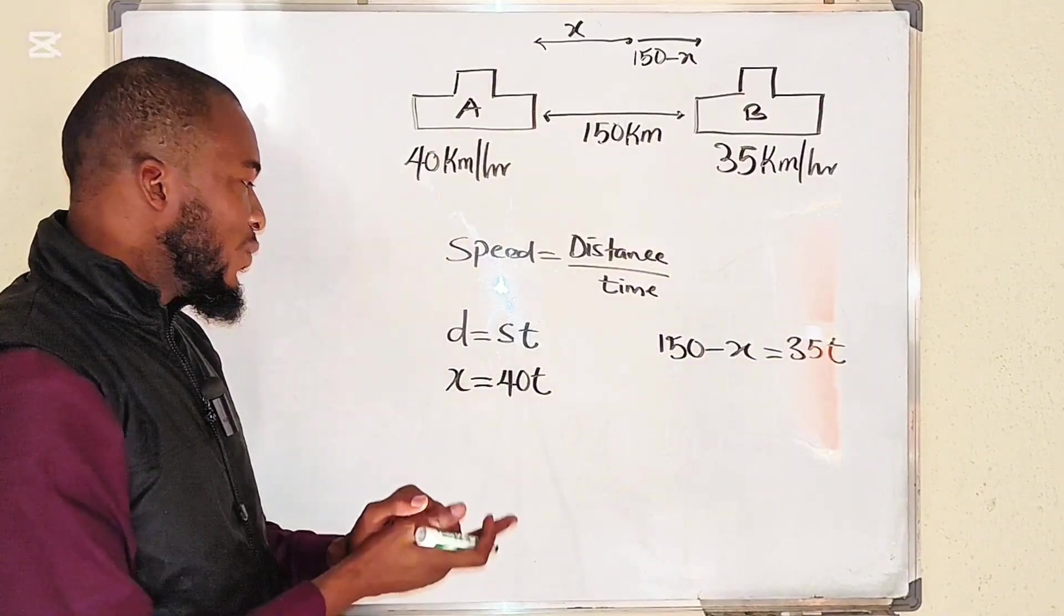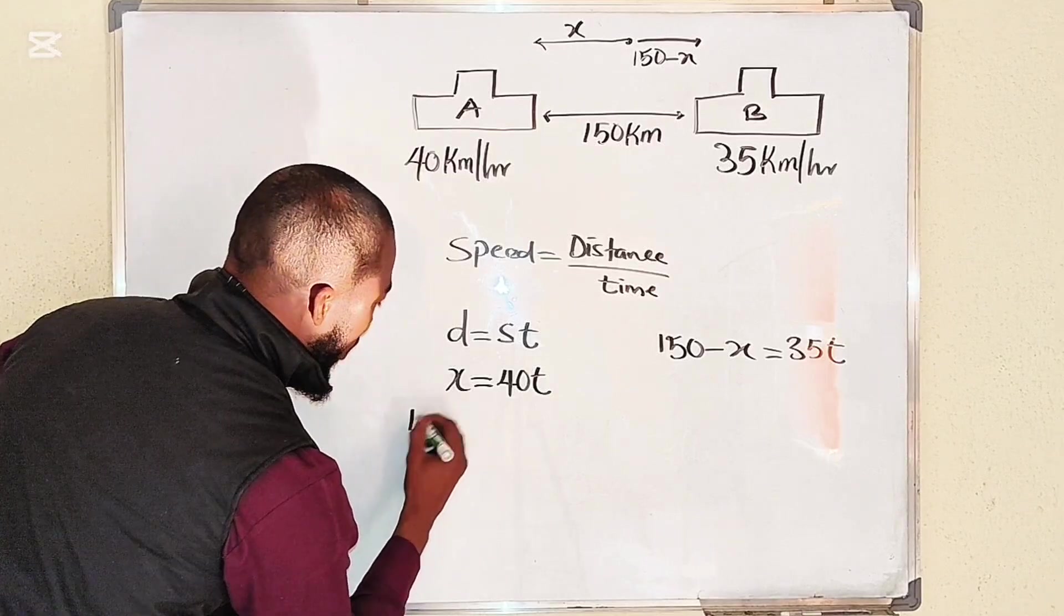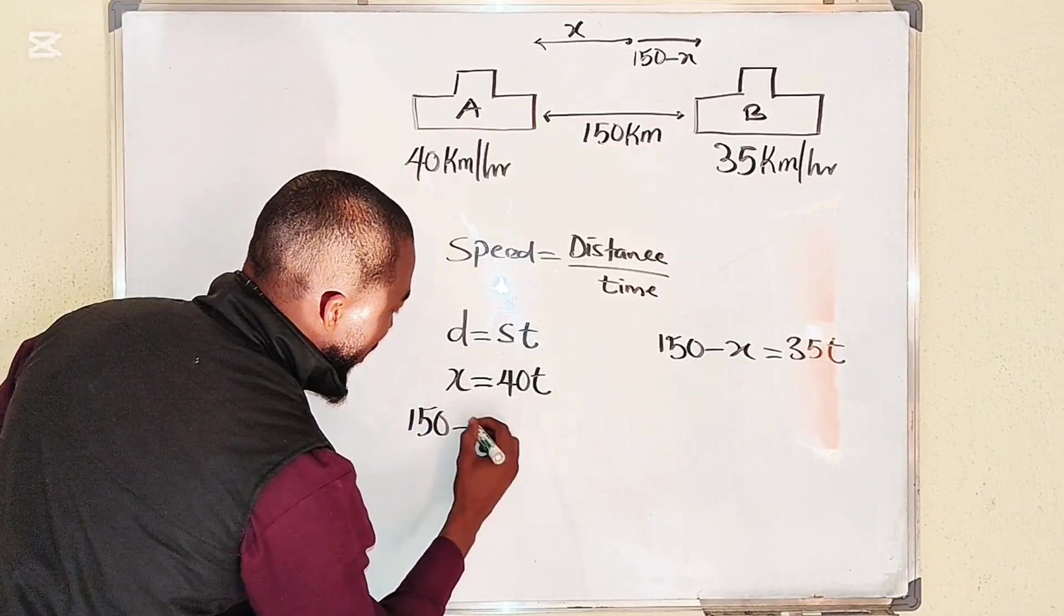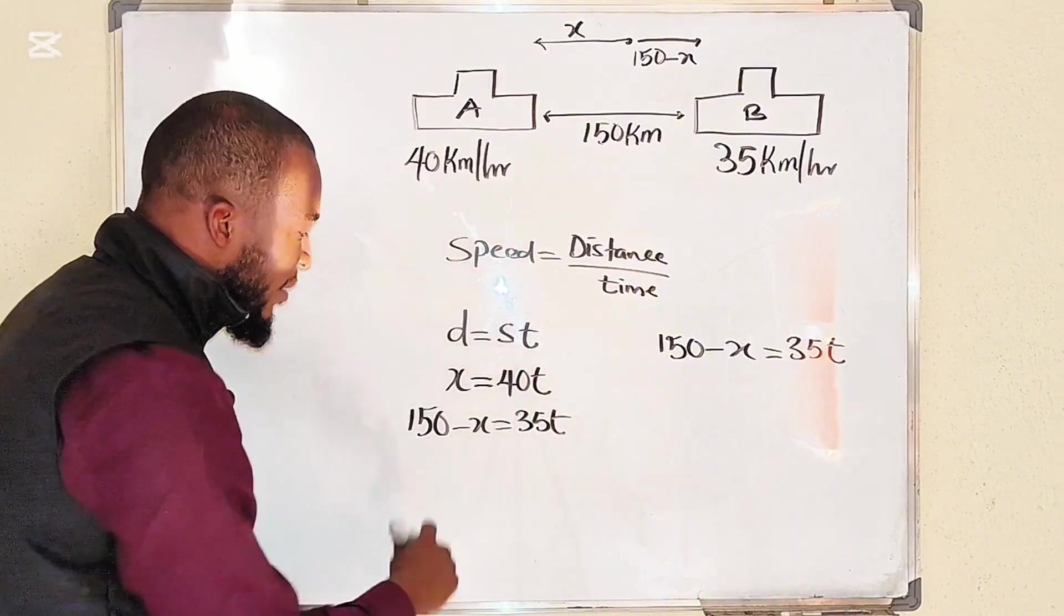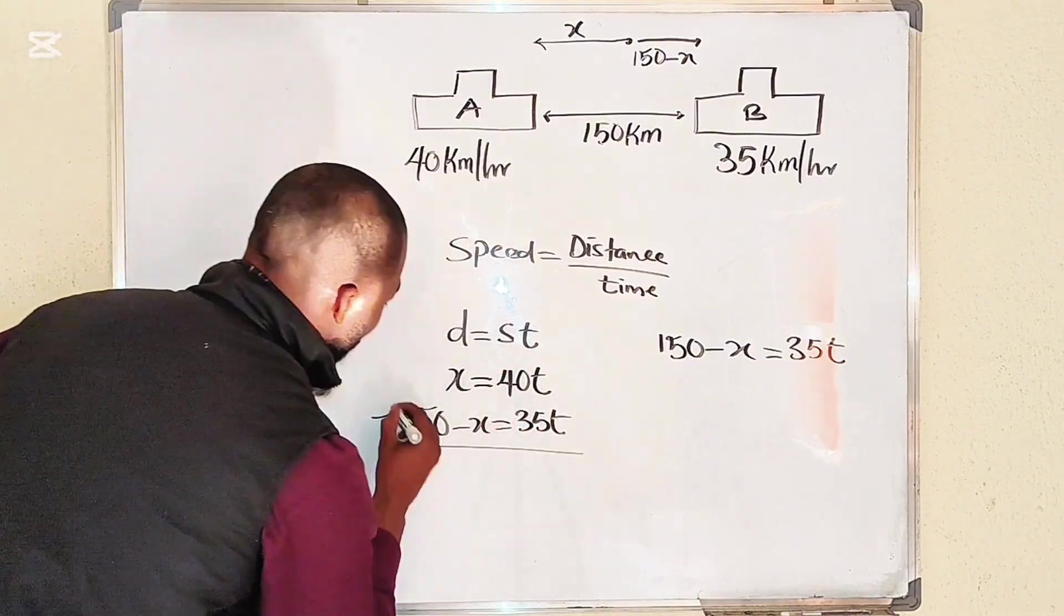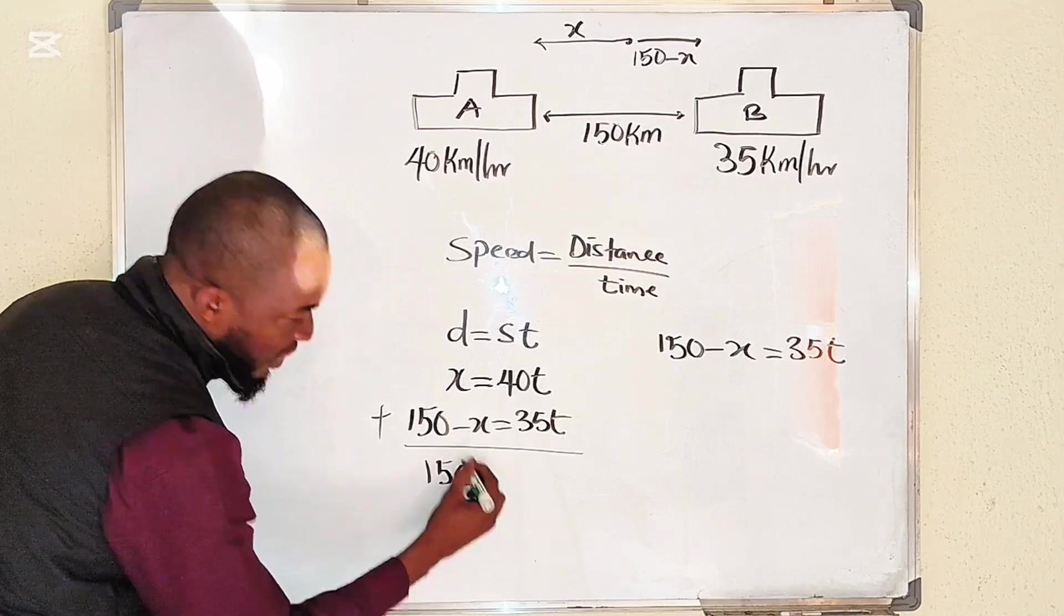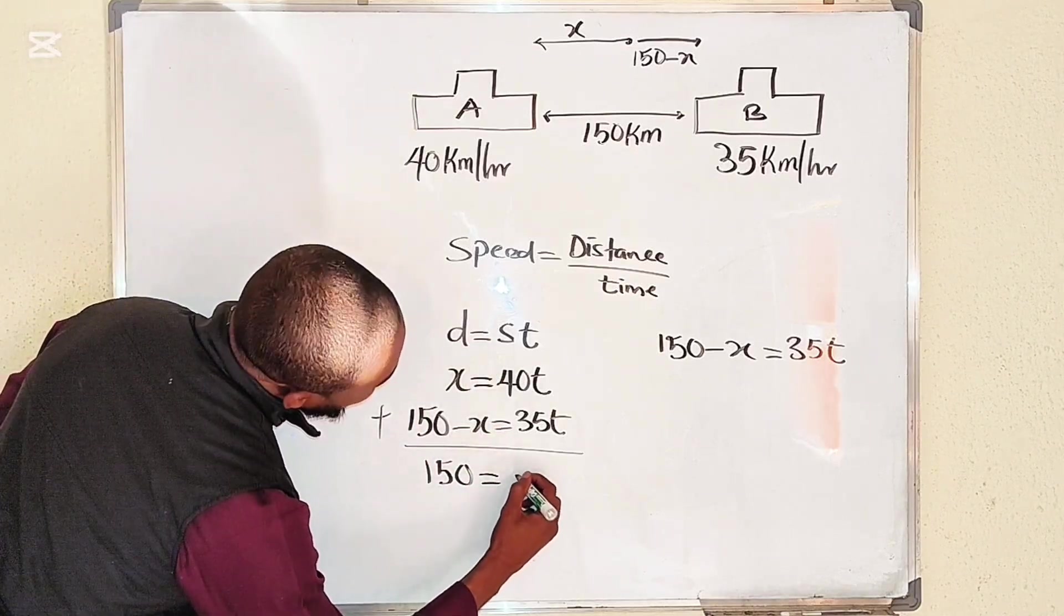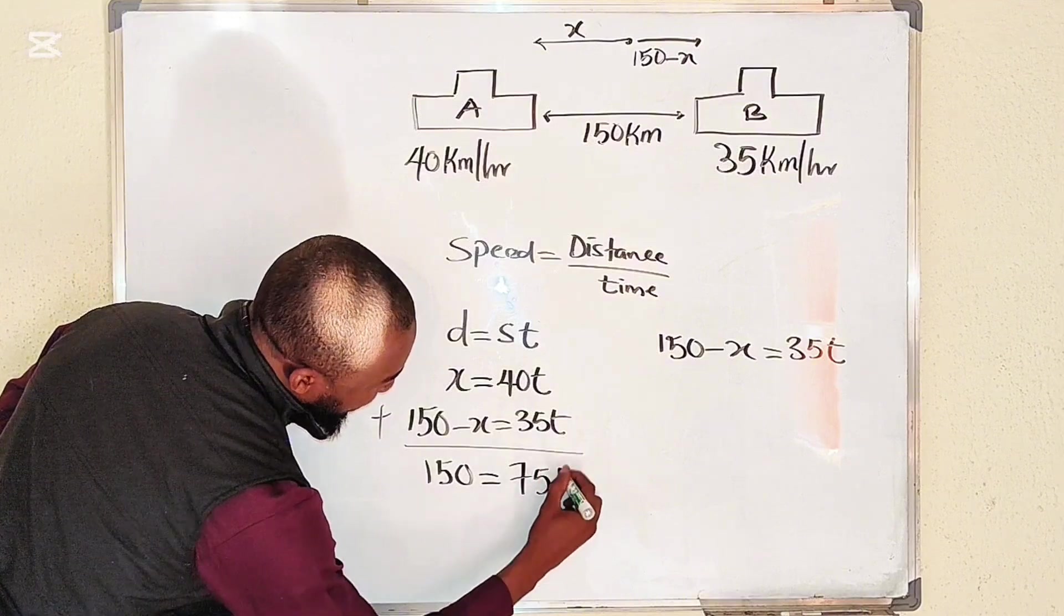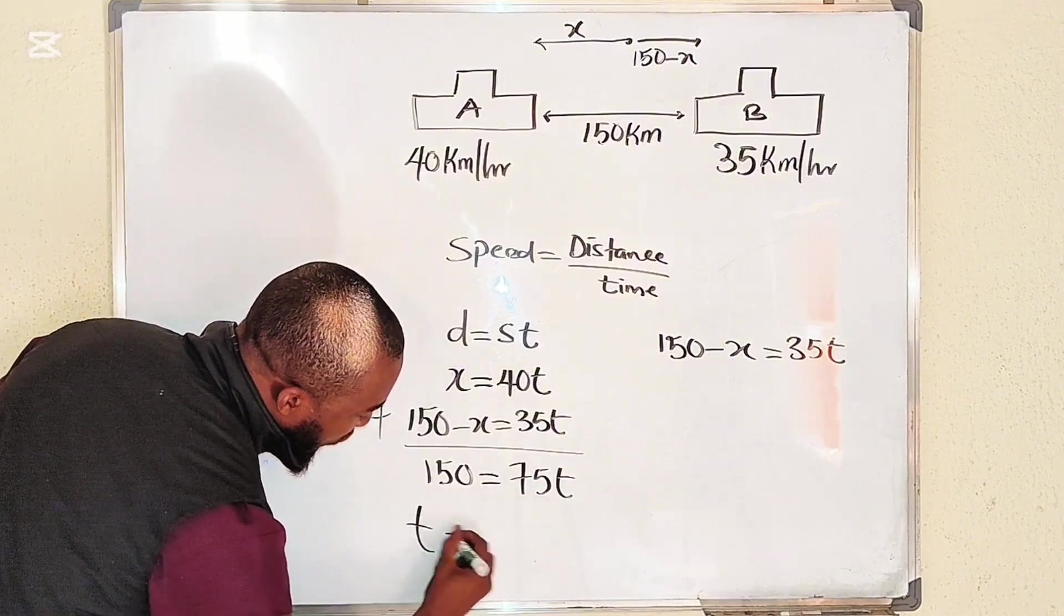I think we can add the two equations together. Let me bring this one down here: 150 minus x equal to 35t. Let's add them together. Once you add them together you have only 150 here because x and negative x will cancel, and this is equal to 75t.